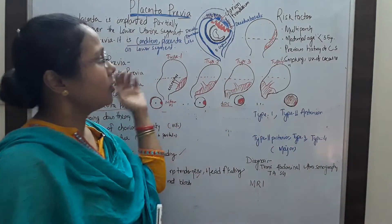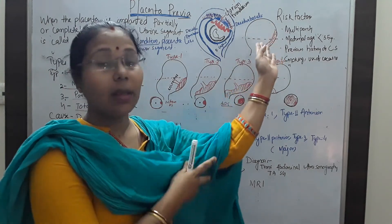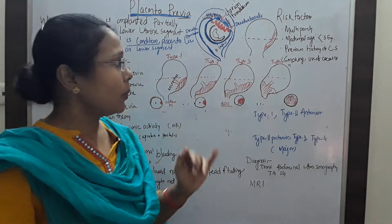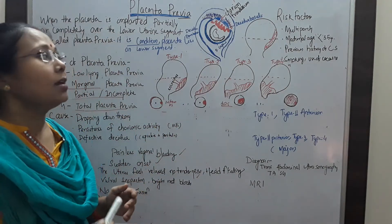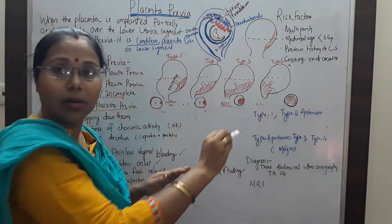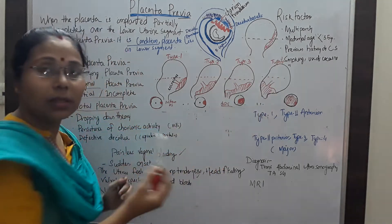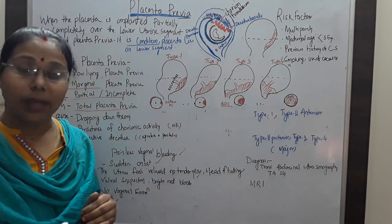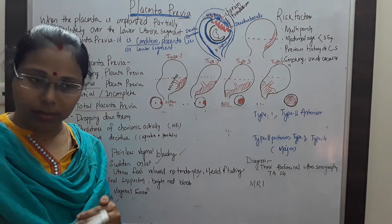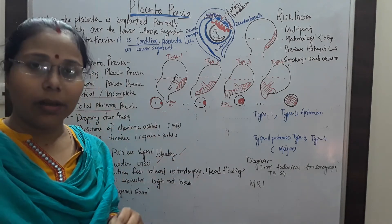So this is our uterus. If you draw an imaginary line, the upper part is called the upper segment and the lower one is called the lower segment. Normally the placenta is formed on the upper segment. But due to some abnormalities, the placenta is implanted partially or completely on the lower segment — this is called placenta previa. It is an abnormal condition where, during the time of formation of the placenta, there may be problems causing the placenta to implant on the lower uterine segment.